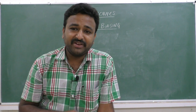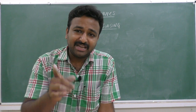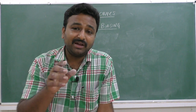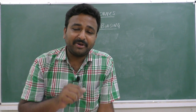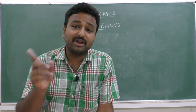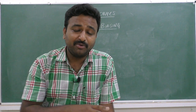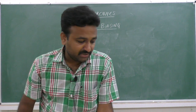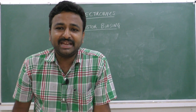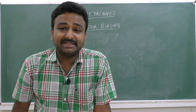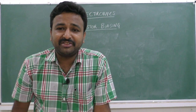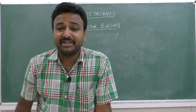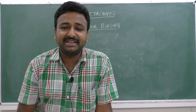To recap: a transistor has three terminals. We discussed voltage notations like VC, VE, VB, VCC, VBB, and VEE. We covered the potential differences across junctions — VBE, VCB, VCE. We discussed transistor configurations: CE configuration, CC configuration, and CB configuration. We also discussed modes of operation: saturation mode, cut-off mode, and active mode. In the next class, we will study transistor biasing — the need for biasing, methods of biasing, and the types of biasing techniques.